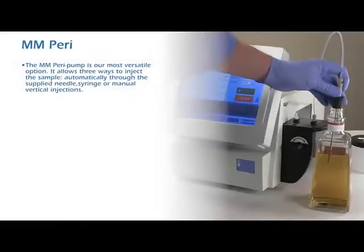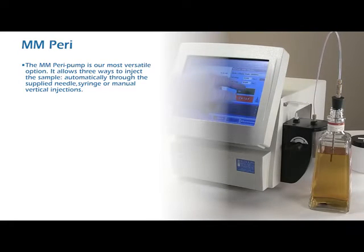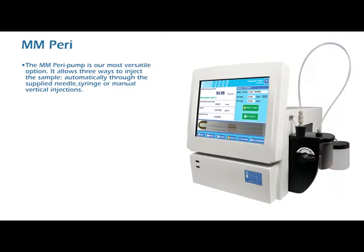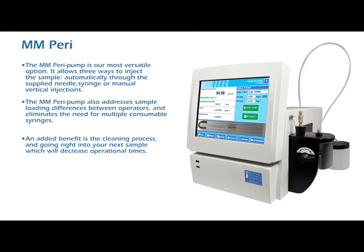The MM para-pump is our most versatile option. It allows three ways to inject the sample: automatically through the supplied needle, syringe, or manual vertical injections. The MM para-pump also addresses sample loading differences between operators and eliminates the need for multiple consumable syringes. An added benefit is the streamlined cleaning process, allowing you to go right into your next sample and decrease operational times.